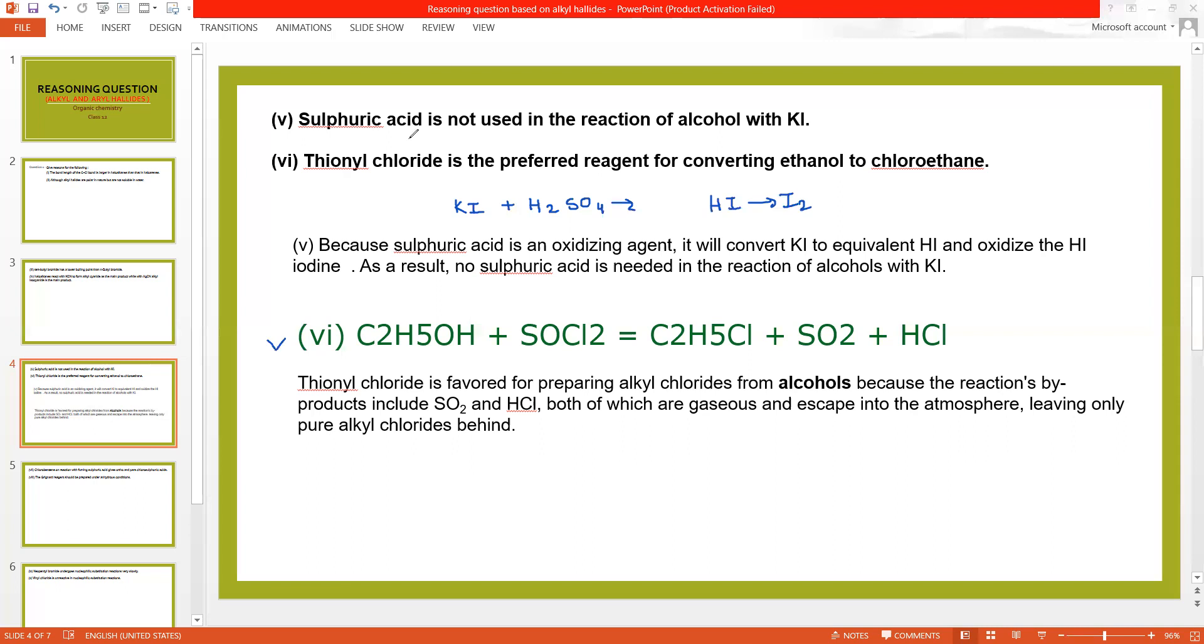Next reason, thionyl chloride is preferred over other reagents for converting ethanol to chloroethane. You can see that C2H5OH with SOCl2 which is called thionyl chloride produces ethyl chloride. SO2 and HCl both are gaseous state and will leave out, leaving behind pure ethyl chloride. This is an important reason.